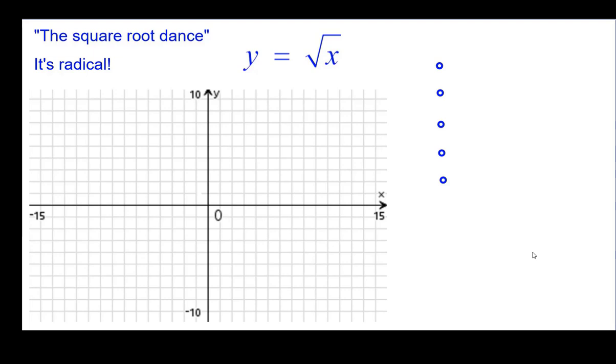And so for the square root dance, we're going to do this. Yes, it's radical. So we'll start with the origin, 0, 0, the vertex. And then we're going to go right 1 and up the square root of 1, which is 1. Then right 4 and up the square root of 4, which is 2.